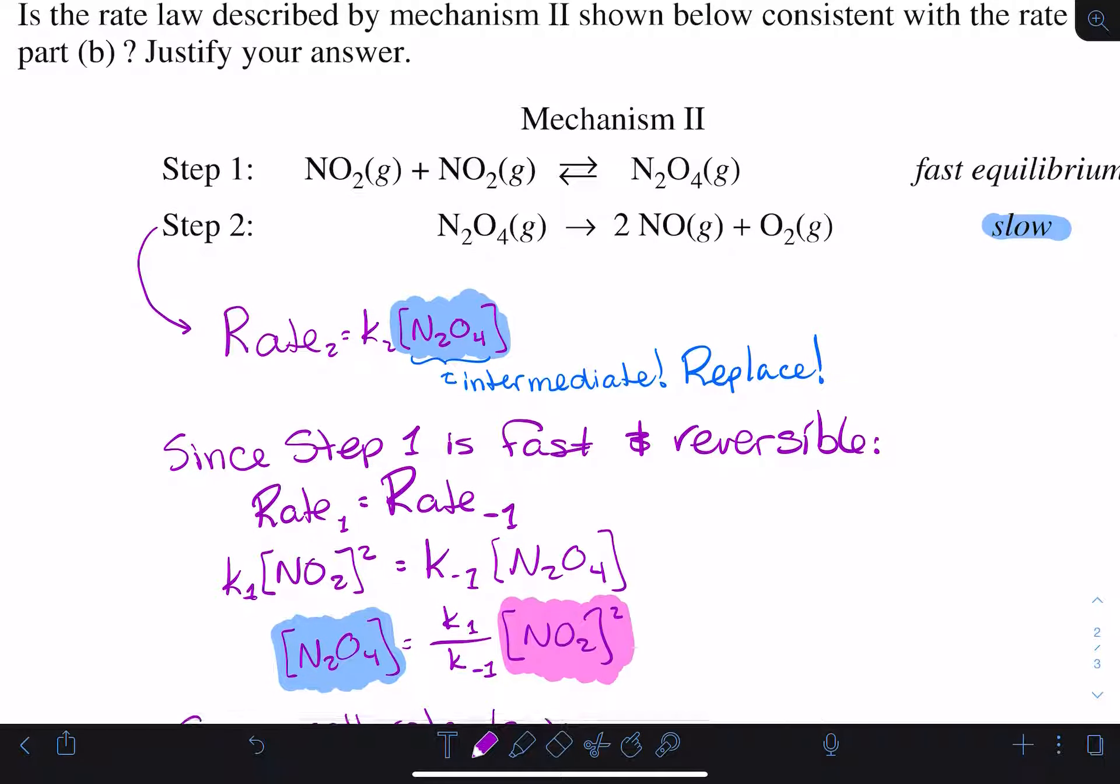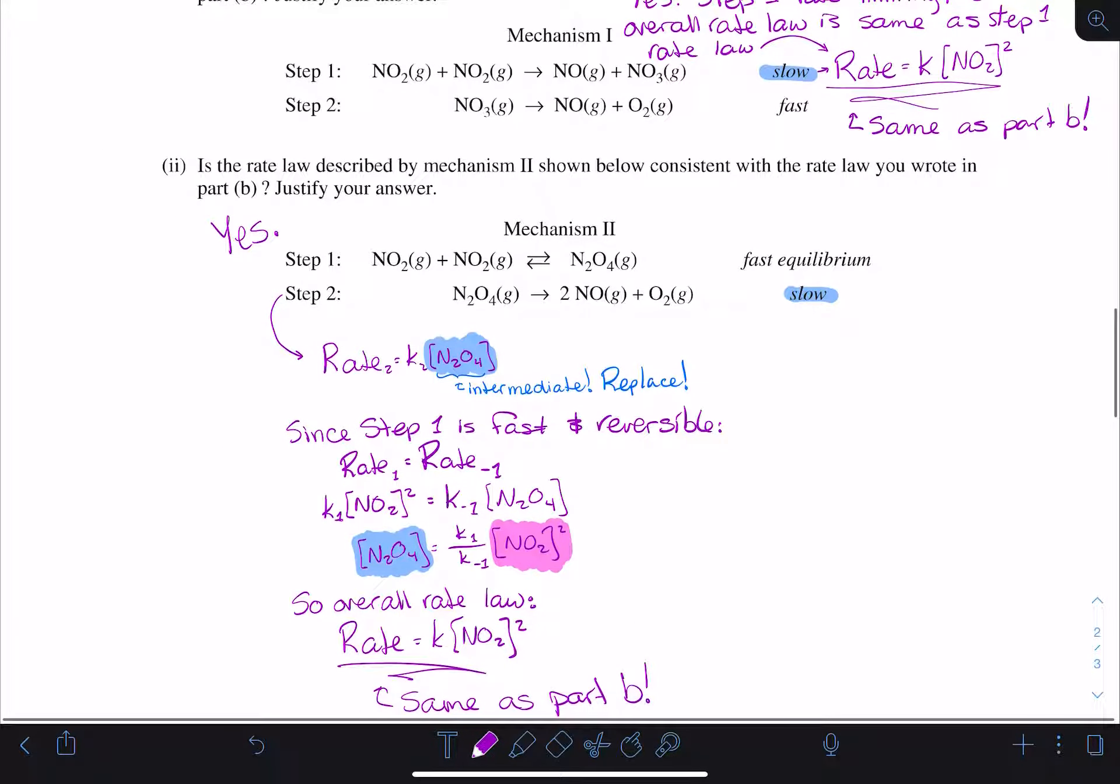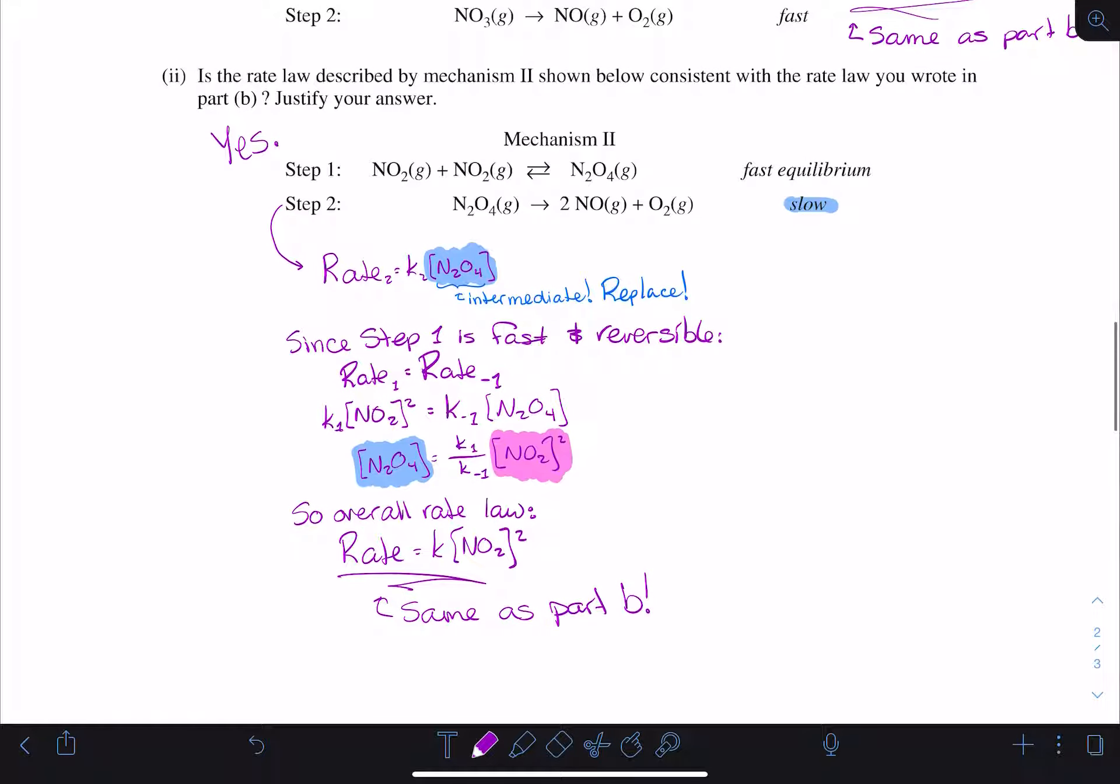This is also a yes—this is consistent. Either of these mechanisms could be consistent with the data that's been provided, because the overall rate law based on either mechanism ends up the same.